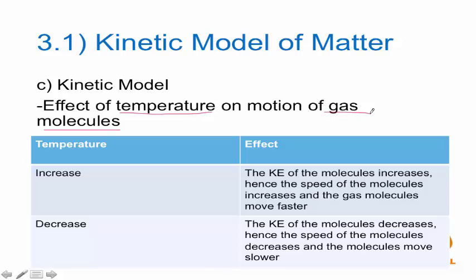When temperature increases, it causes the kinetic energy of the molecules to increase. Hence, the speed of the molecules increases and the gas molecules move faster. You have to remember that KE equals half mv². There's a component of velocity inside, so when kinetic energy increases, assuming the mass of the gas molecules is the same, the velocity of the molecules increases. When temperature decreases, the converse happens — kinetic energy decreases, speed decreases, and the molecules move slower.